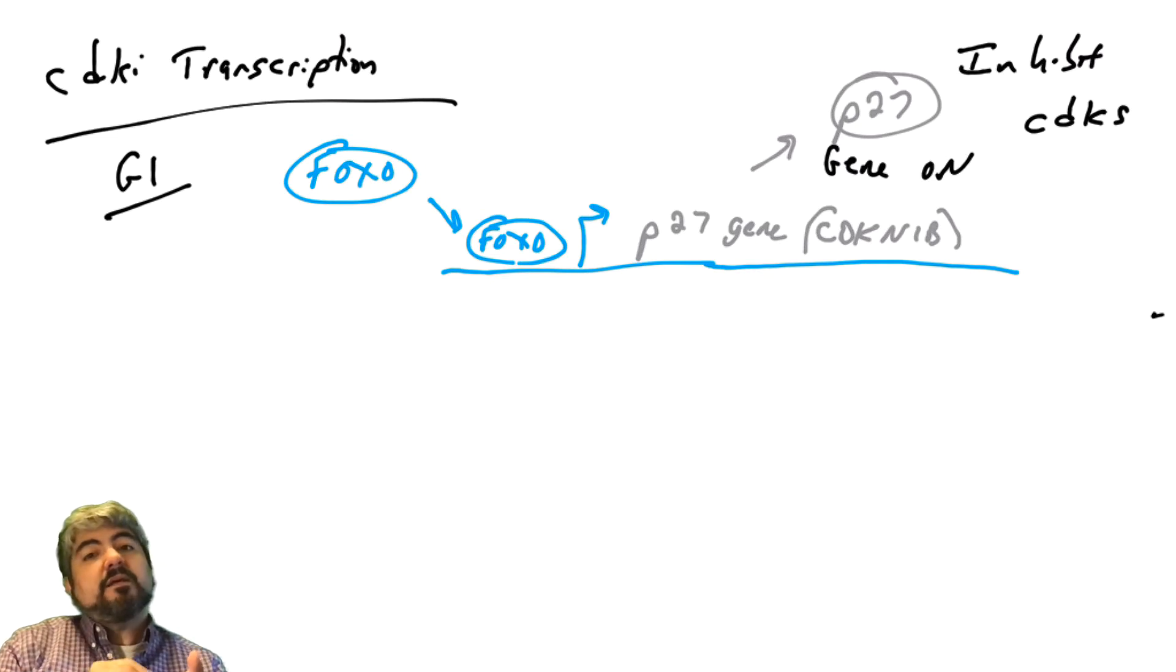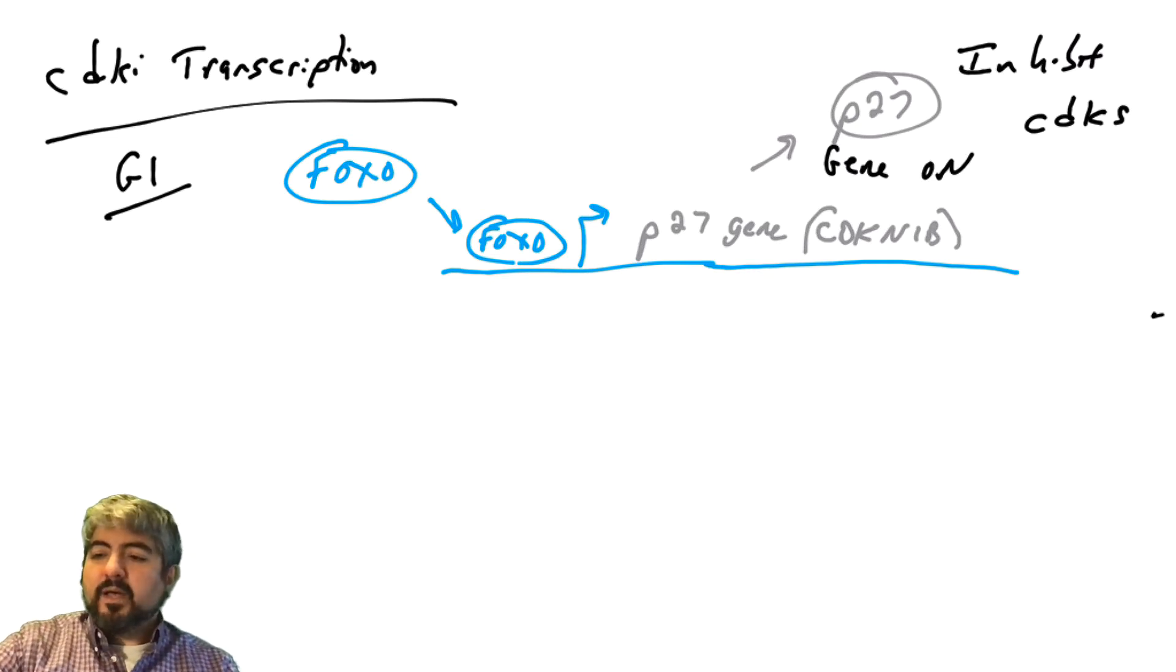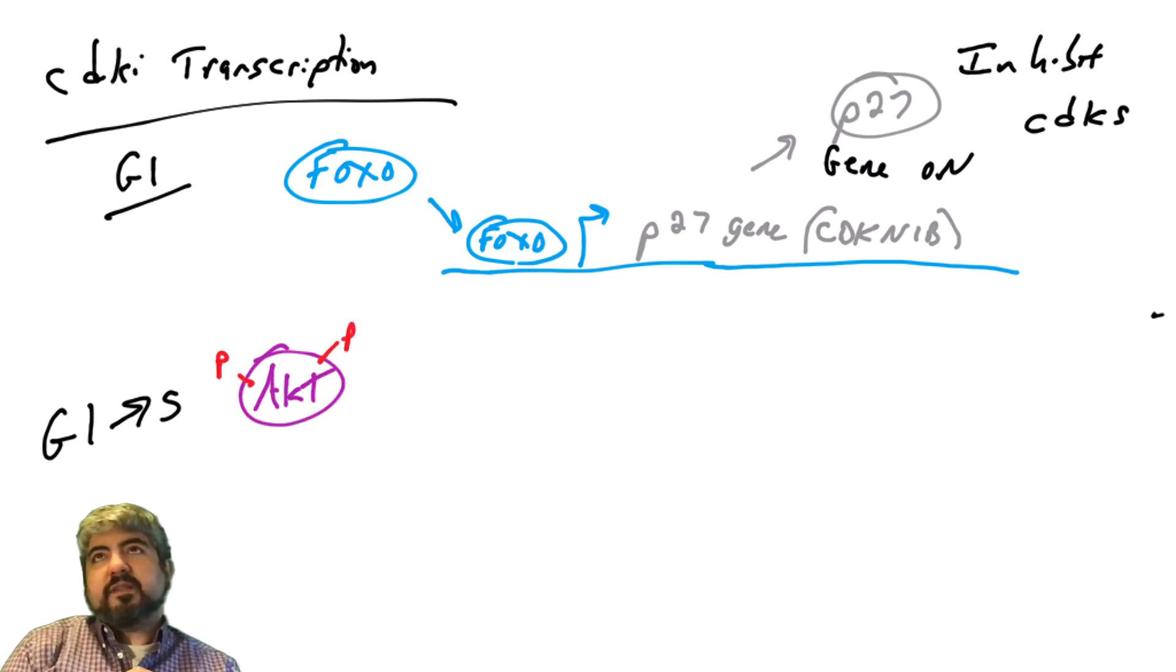So when FOXO is active, P27 can be produced at the gene level. Well, we know what controls, what can regulate FOXO, the AKT pathway.